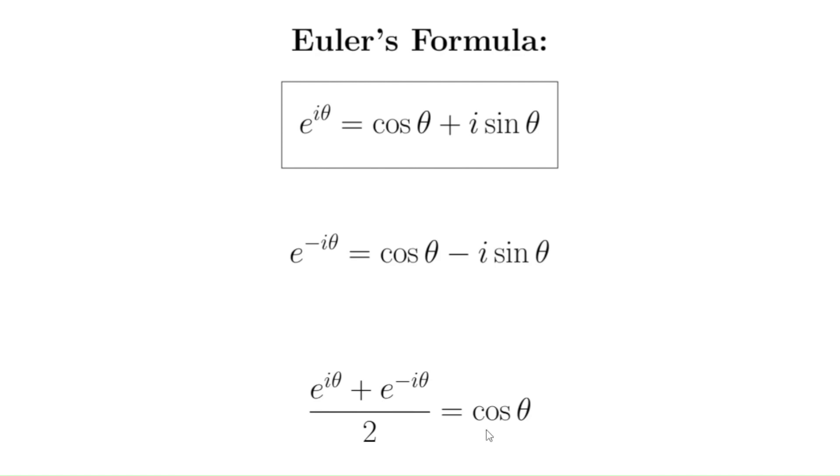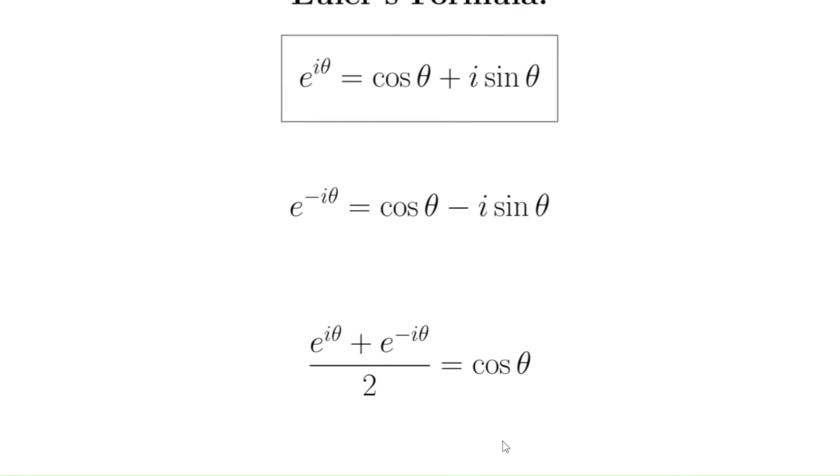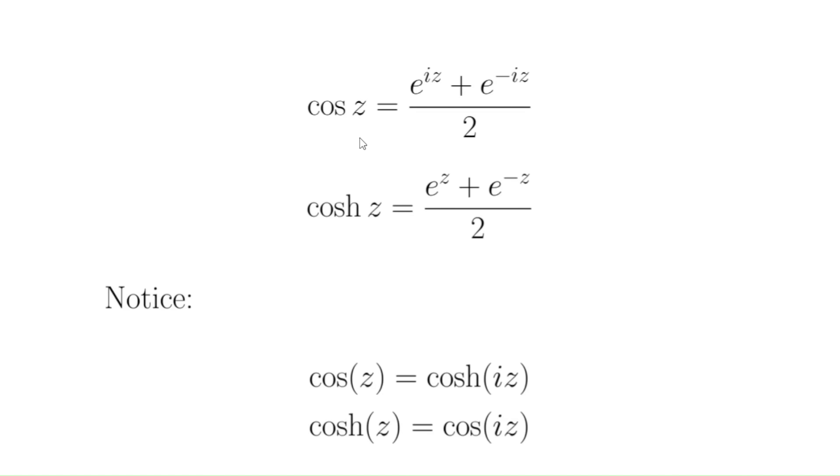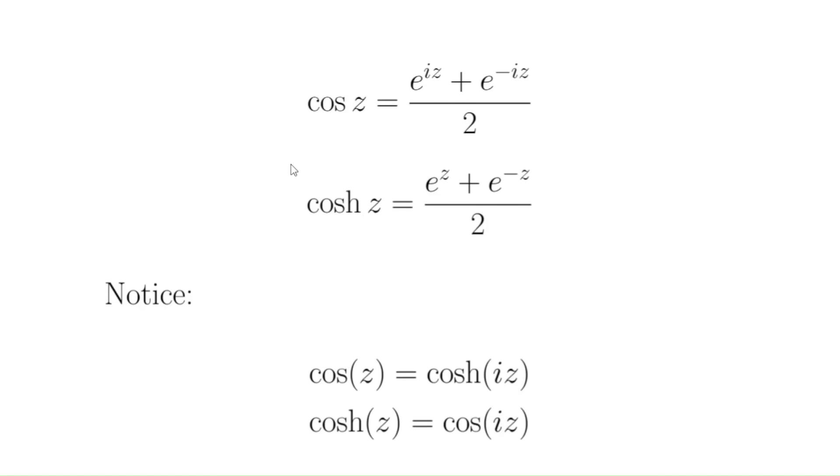And then it turns out that although we might have seemed to be assuming that theta here was a real number, we can actually allow it to be a complex number. And we write cosine of z is e to the iz plus e to the minus iz over two. So that justifies why we are allowed to write cosine of z like this. Now, there is another way that we can see why these equations should be true without having to resort to this definition of cosine. So we don't really need Euler's formula and so forth. And here's how.